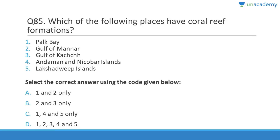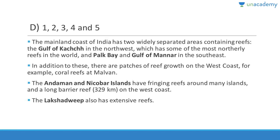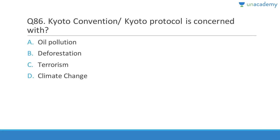Question 85: Coral reef formations are found at Palk Bay, Gulf of Mannar, Gulf of Kutch, Andaman and Nicobar Islands, and Lakshadweep Islands — all five locations have coral reef formations, and they have different types of reefs.